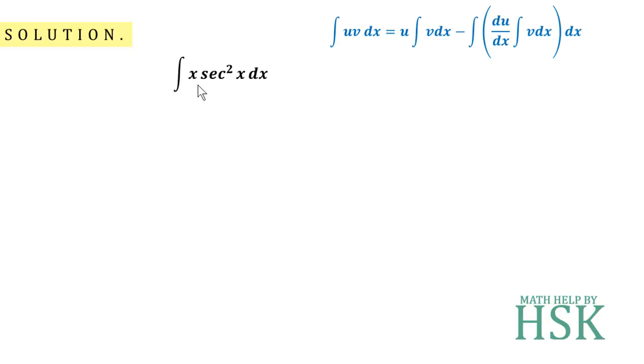Taking x as first function and sec square x as the second function, we are going to get x into integration of sec square x minus differentiation of x into integration of sec square x.